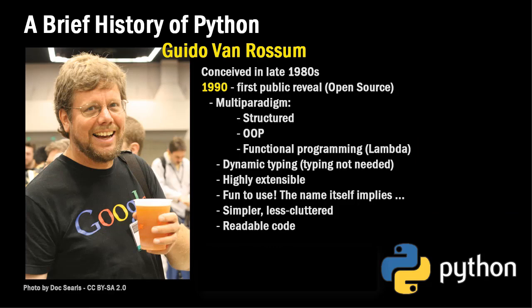Guido also wanted Python to be simpler and less cluttered than other languages, and he wanted the code to be very readable. That's one nice thing about learning Python — it's easy to look at somebody else's code and make heads or tails out of it, because the code is simpler, less cluttered, and therefore more readable.